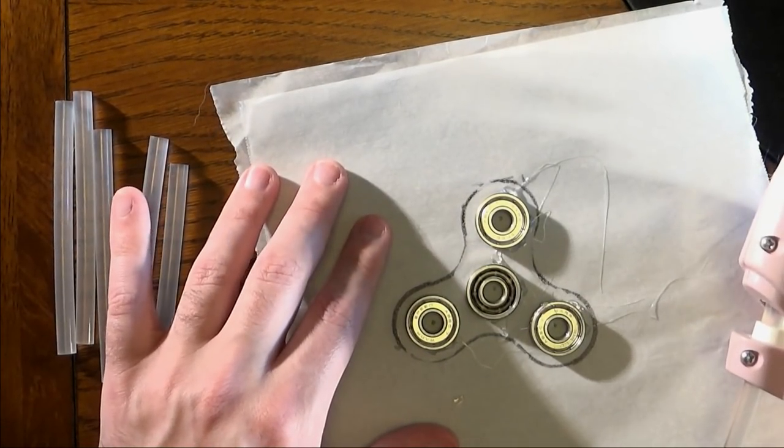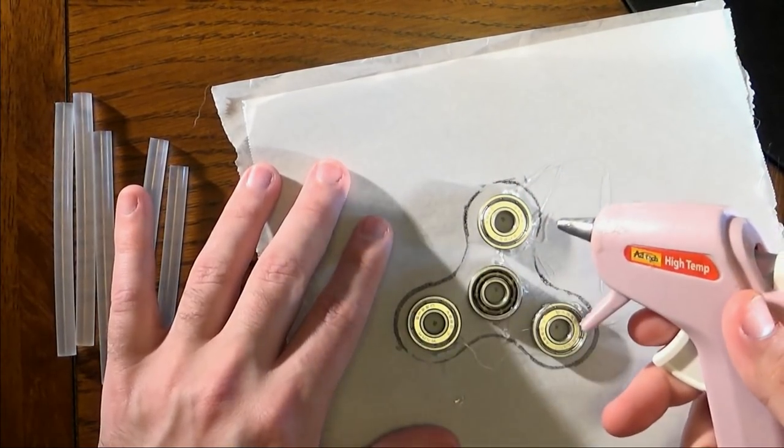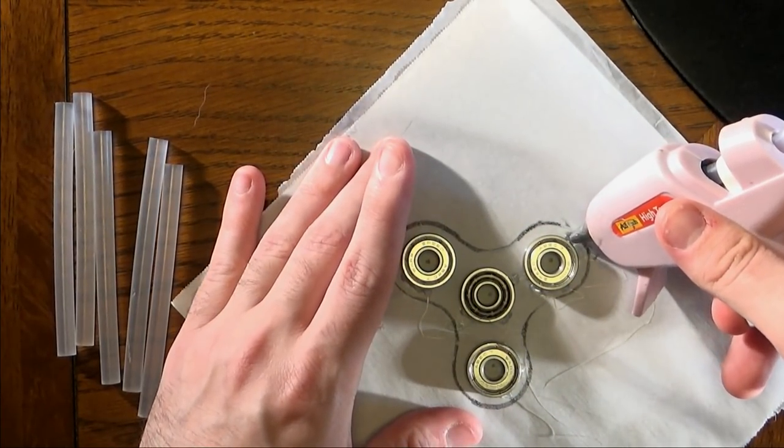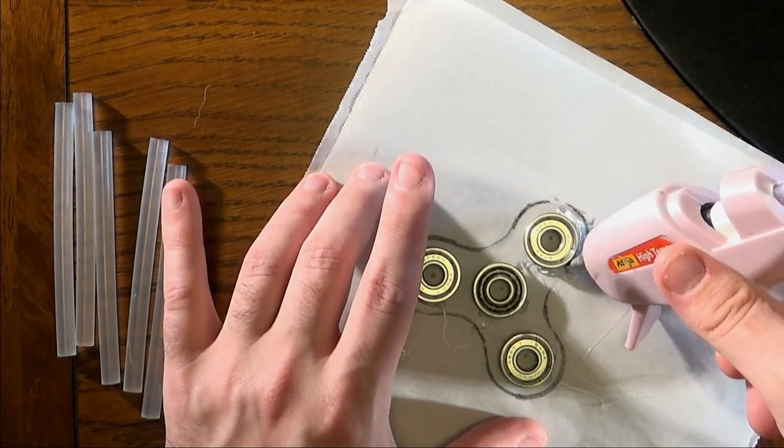So basically, what I'm going to do is I'm going to trace around each of these using the hot glue gun, build up a couple layers of glue, and that will make a spinner. Well, at least a rough one. So I will be back when that is done.